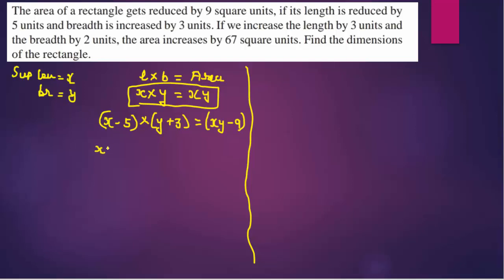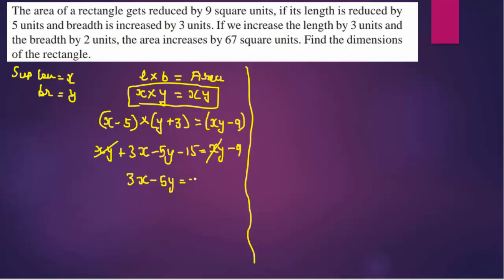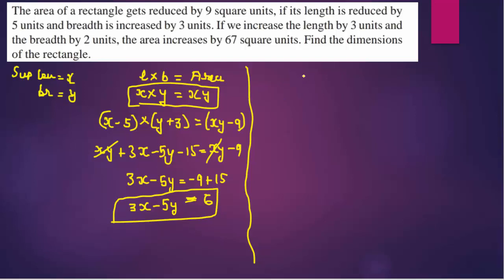Expanding: x times y gives xy, then x times 3 gives 3x, then minus 5 times y gives minus 5y, then minus 5 times 3 gives minus 15. So we get xy plus 3x minus 5y minus 15 equals xy minus 9. The xy terms cancel, and after simplifying you get equation number one: 3x minus 5y equals 6.